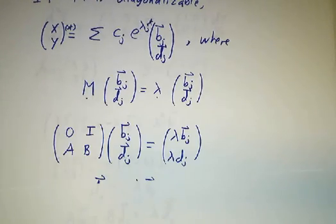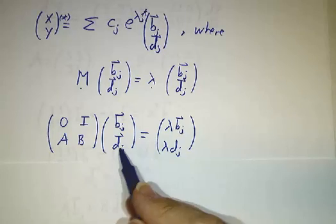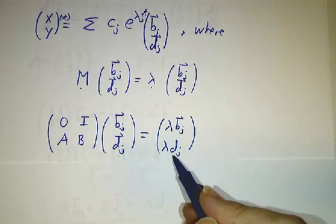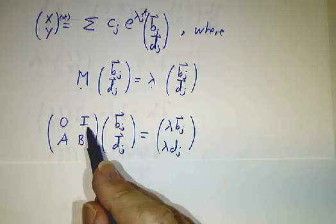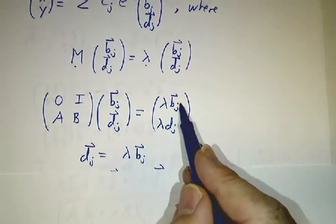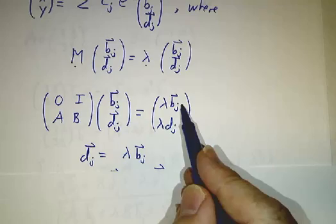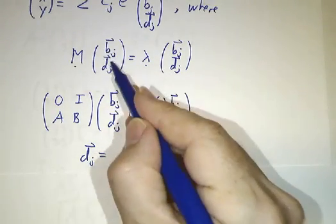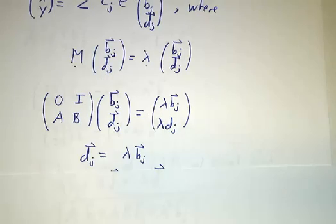Okay, well let's spell that out. If M times bⱼ dⱼ is λ times bⱼ dⱼ, then the first equation just says that dⱼ is λ bⱼ. So once you know what one of these guys is, the other comes along for the ride. It's just λ times it.